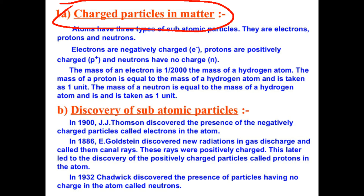Neutrons have no charge — they are neutral. In 1900, J.J. Thomson discovered the presence of negatively charged particles, which were further investigated by William Crookes in a discharge tube experiment. Goldstein discovered protons by conducting gas discharge tube experiments, and those rays were called canal rays. These rays were positively charged.